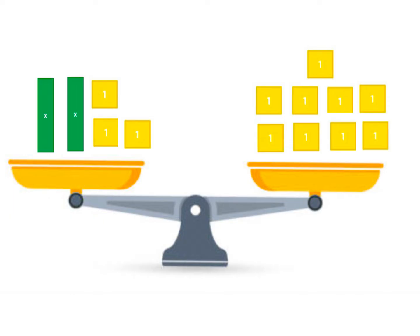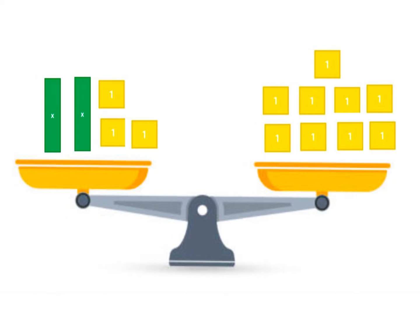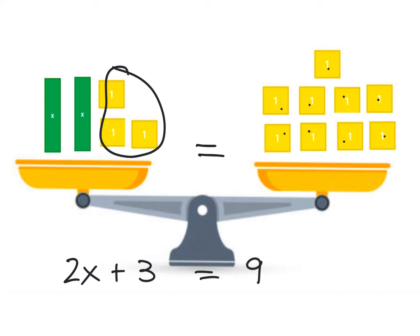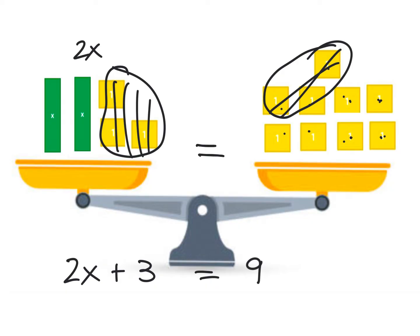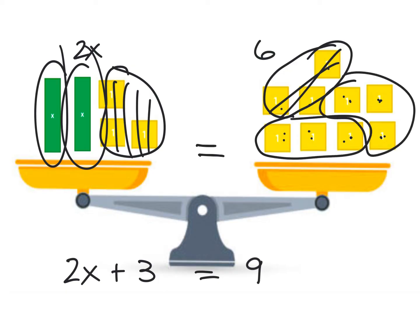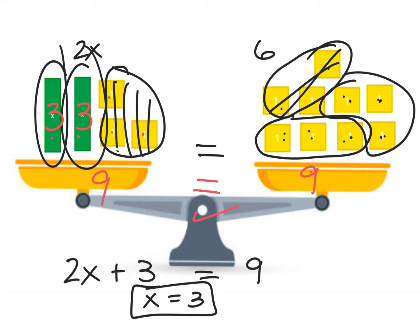Pause the video and try this one: figure out what X has to be for both sides to be balanced, and write the equation the scale shows. On the first side I see 2x plus three 1s, equal to nine 1s. I see three 1s on both sides — those cancel. I have 2 Xs left and six 1s remaining. Splitting six into two groups gives three in each group, so X equals 3. Checking: replacing each X with 3 gives 9 on both sides. My scale is balanced.